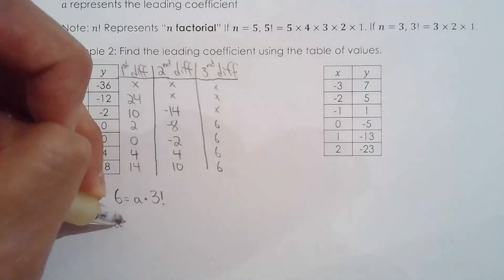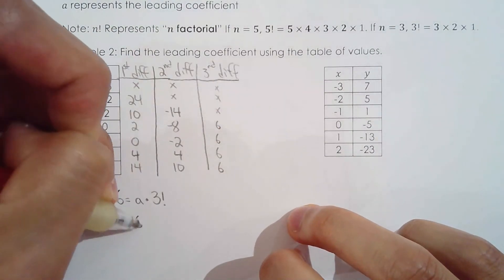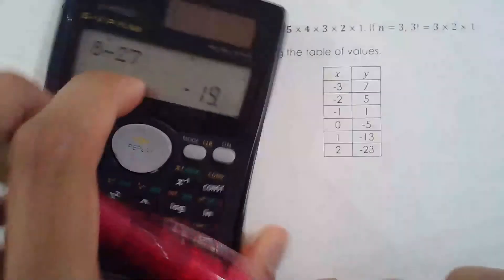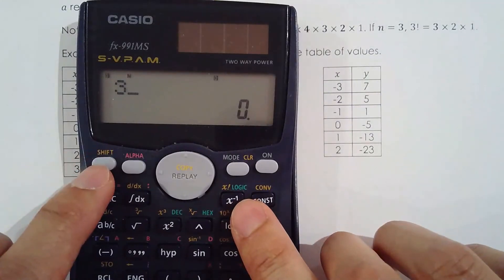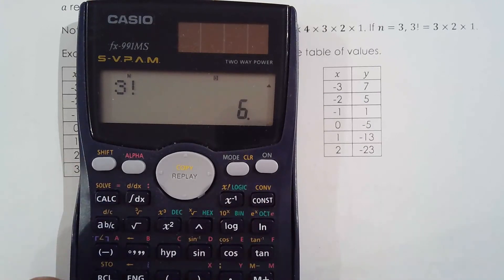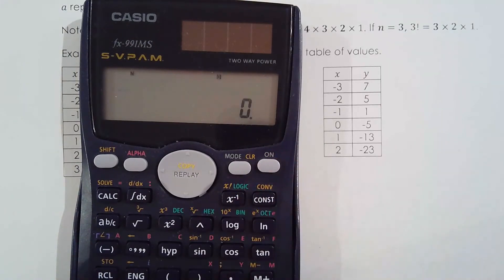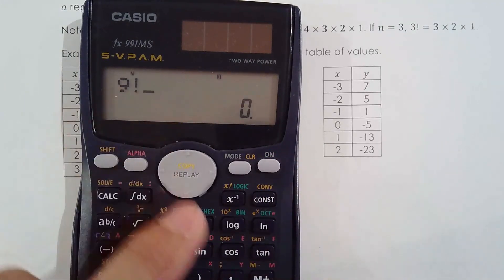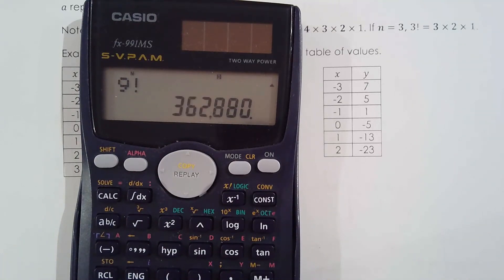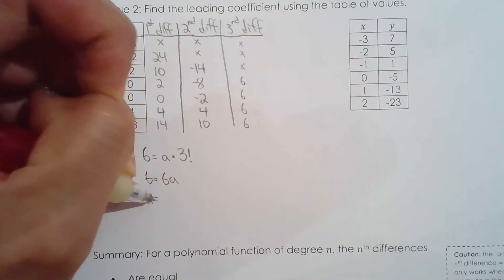So the nth difference, the third differences are constant. So it's 6 in this case. So 6 is equal to A times, I won't write n factorial, because n is the degree. So it's 3 factorial. 6 is equal to 3 factorial, which is 3 times 2 times 1, which is 6. By the way, this is a factorial button. So I do shift, and there's this button right here, there's an exclamation mark. So 3 factorial is 6. 5 factorial, 120. Let's do 9 factorial, which is 9 times 8 times 7 times 6 times 5 times 4 times 3 times 2 times 1. There's your number, 362,880. Anyways, the leading coefficient is 1.